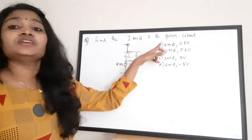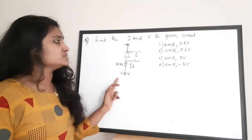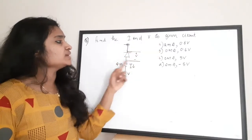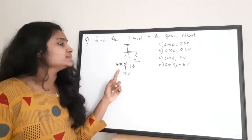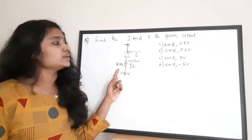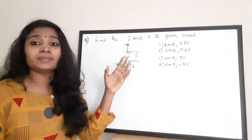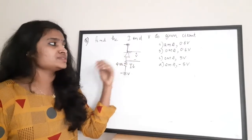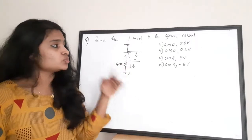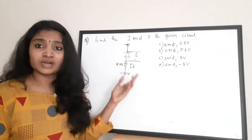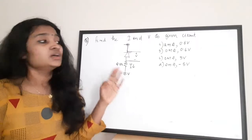Next question: find I and V in the given circuit. The circuit has a diode and a 2.5K resistor, and you need to find the voltage across the diode and the current flowing through the resistor. Options: A — 2 milliampere, 0.6V; B — 0 milliampere, 0.6V; C — 0 milliampere, 5V; and D — 2 milliampere, minus 5V.